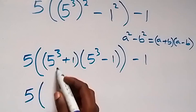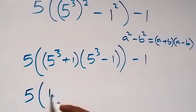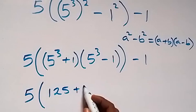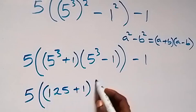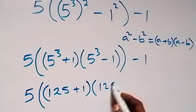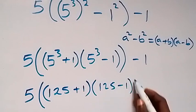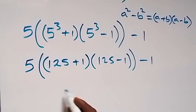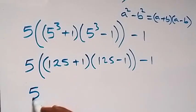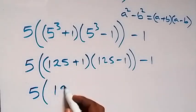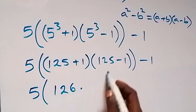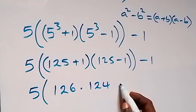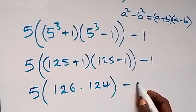5 raised to power 3 is simply 5 times 5 times 5, which is 125. Then plus 1 here, then multiply by, also we have 125 minus 1. Then close bracket, minus 1 here. And here, this gives us 5 into bracket. Here we have 126, and here we have 124. Then close bracket, minus 1.